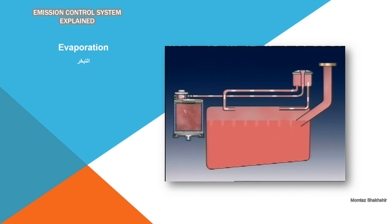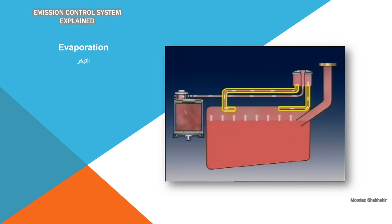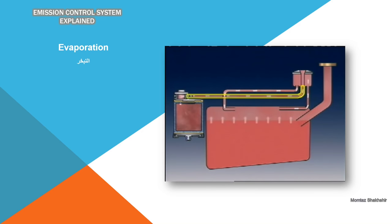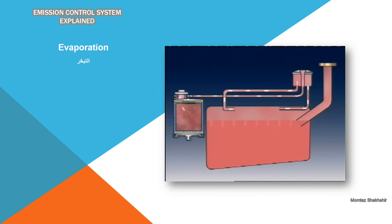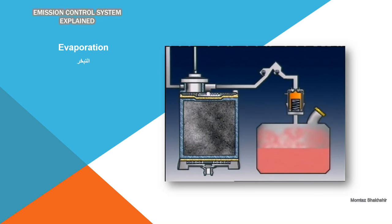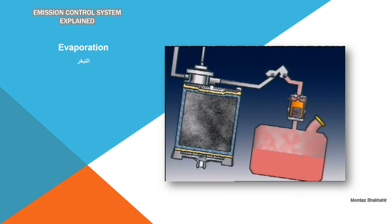A liquid vapor separator may be connected to the tank by a number of tubes. This separator allows liquid fuel to separate from the vapors and return to the tank. A vapor line is connected to the vapor space in the tank or the liquid vapor separator, and it carries fuel vapors from the tank to a storage volume. This vapor line can incorporate check valves — if the vehicle is tilted too far from the horizontal, they stop liquid fuel from entering the storage volume.